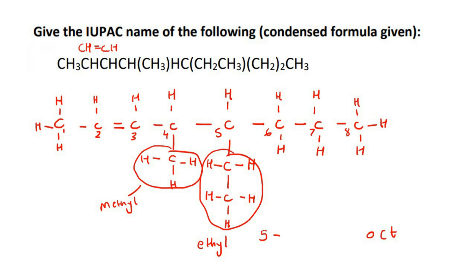So E comes before M, so we're gonna say 5-ethyl then 4-methyl. I'm gonna run out of space. Methyl, and then we have oct. Now this is a double bond, so we're gonna say on carbon number two there is a double bond. And that would be the name of this one. So that's quite a good one.